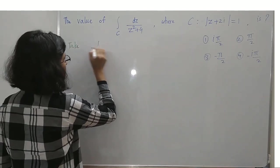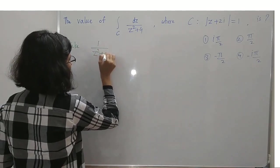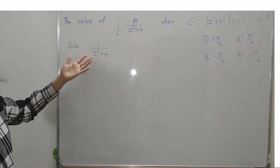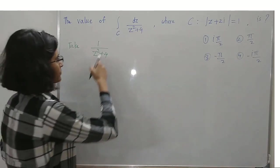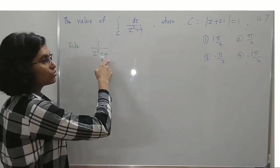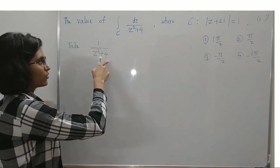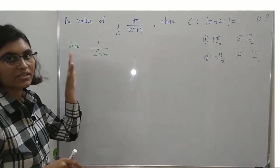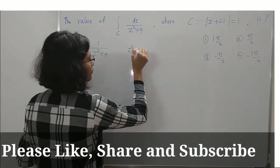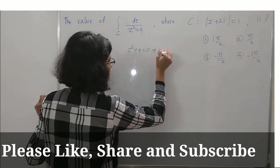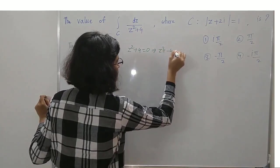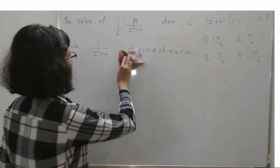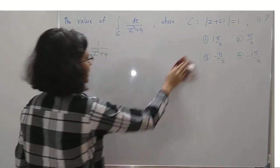Consider the function 1/(z² + 4). We find where it is not analytic. Since it is a quotient of analytic functions, it fails to be analytic when the denominator z² + 4 = 0, giving z² = -4 and hence z = ±2i. So the function is not analytic at z = +2i and z = -2i.